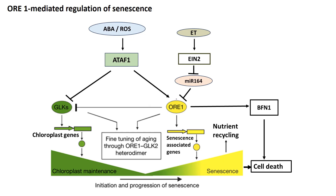Some NAC transcription factors called ORE1 or ORE9 also promote leaf senescence associated with natural aging. ORE1 mutants show a delay in age-induced senescence while ORE9 mutants show a delay in both age- and hormone-induced senescence. WRKY71 directly regulates ORE1 expression besides that of EIN2. The expression of ORE1 is negatively regulated by microRNA164, suggesting epigenetic control of senescence. EIN2, which is progressively expressed in aging leaves, represses microRNA164 expression, leading to ORE1 activation and the promotion of senescence.